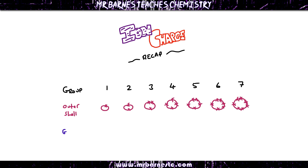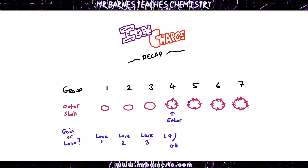This also tells you the number of electrons that an atom wants to either lose or gain. Because lithium in group 1 has 1 in the outer shell, it's easier to lose 1 electron than it is to gain 7. Group 2: easier to lose 2 than gain 6. Group 3: easier to lose 3 than gain 5. Group 4: either could happen — it could lose 4 or gain 4. Group 5: easier to gain 3 than lose 5. Group 6: easier to gain 2 than lose 6. Group 7: easier to gain 1 than to lose 7.